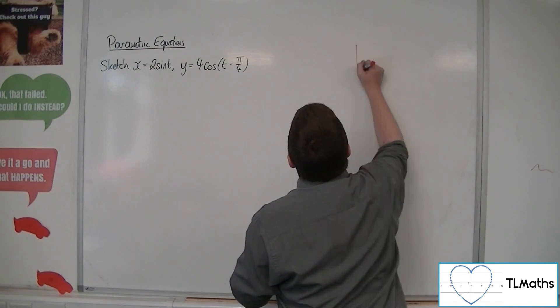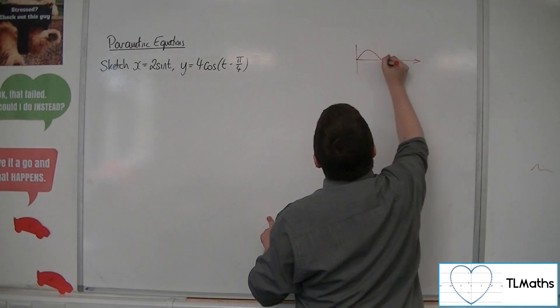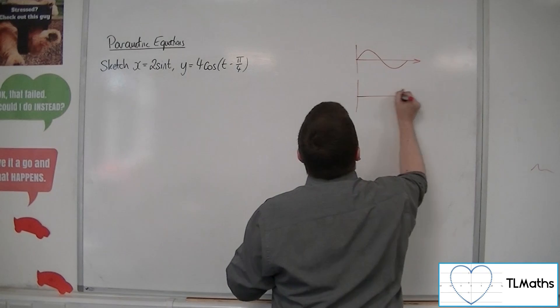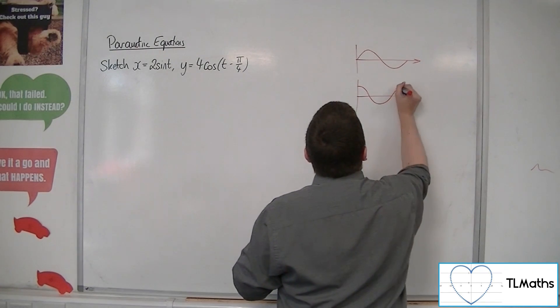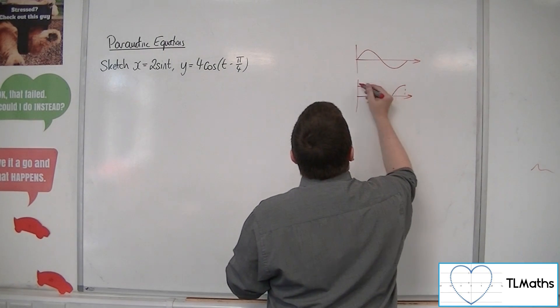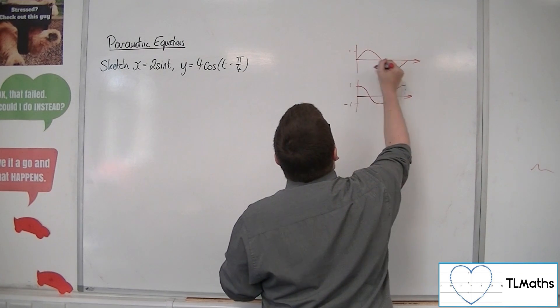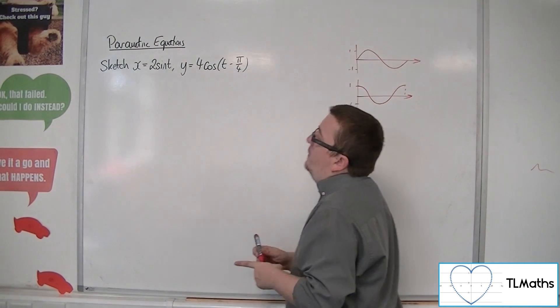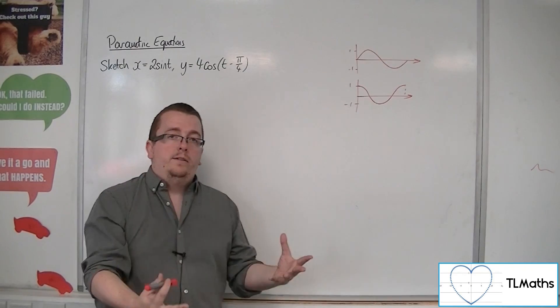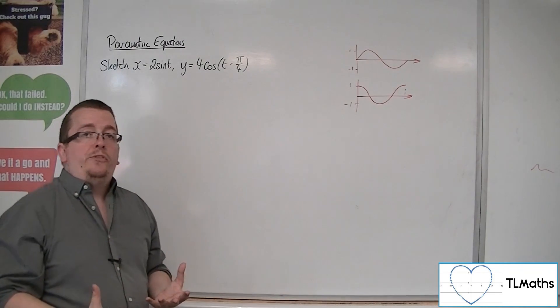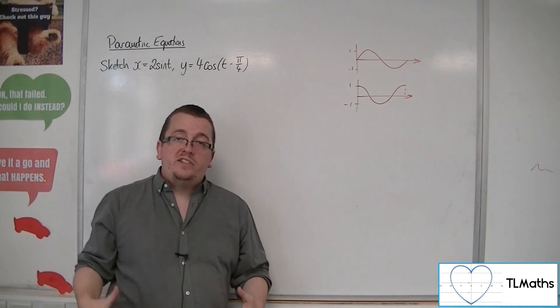Now we know that sine is a curve that looks like that and cosine is a curve that looks like that. And they both have in common the fact that they go from 1 to minus 1. So the maximum value of sine is 1, the minimum value of sine is minus 1, and precisely the same for cosine.